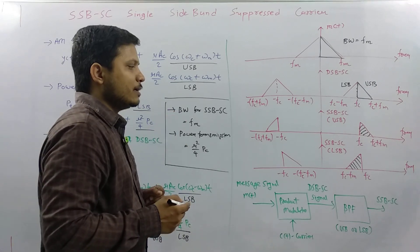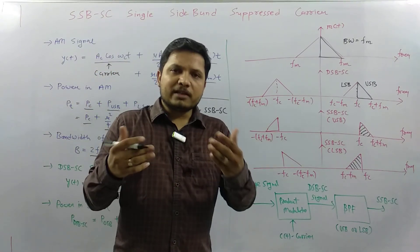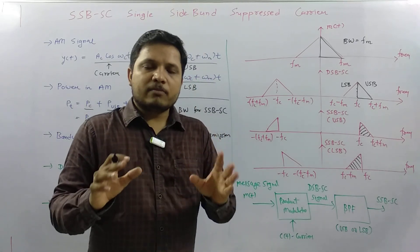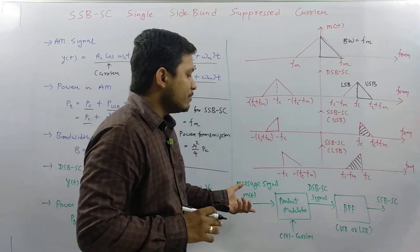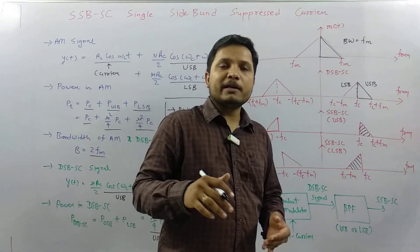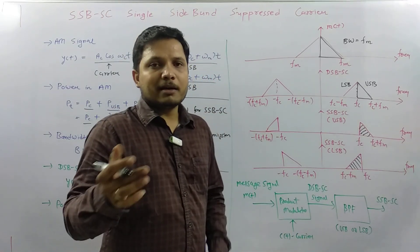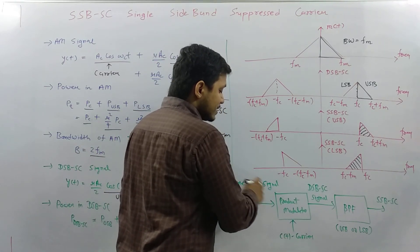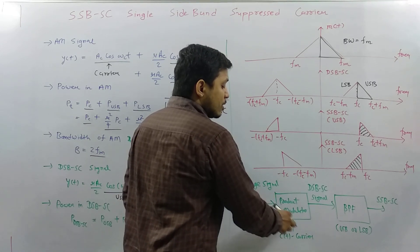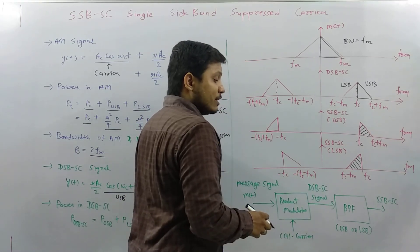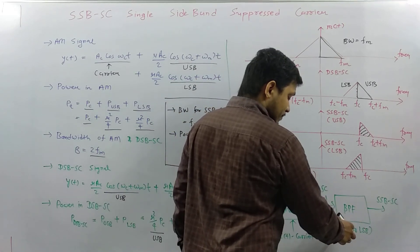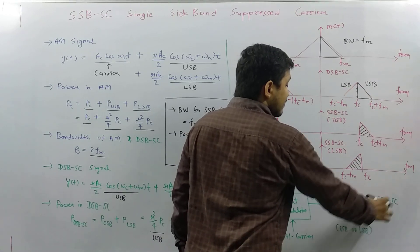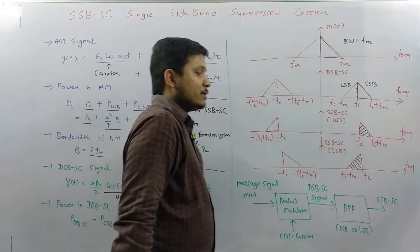The question is: how to generate an SSB-SC signal? It is quite simple and similar to generating DSB-SC — we give the message signal and carrier signal to a product modulator to generate DSB-SC, and then pass it through a bandpass filter. That bandpass filter will only pass either USB or LSB, producing the single sideband suppressed carrier signal.